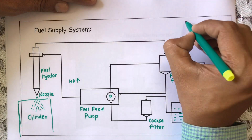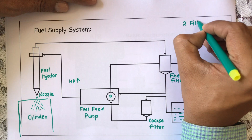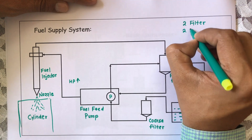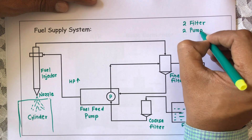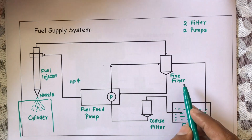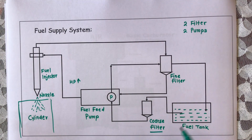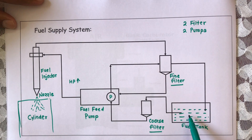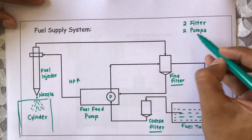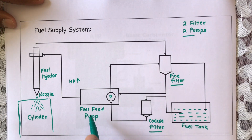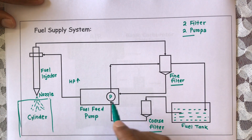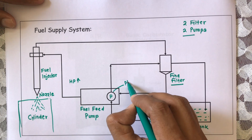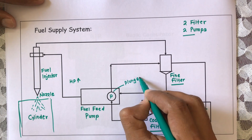Here, how many filters and pumps have we used? We have used two filters and two pumps. The two filters are the coarse filter and the fine filter — these are used to filter the fuel coming out from the tank. The two pumps are the fuel feed pump and the plunger feed pump.